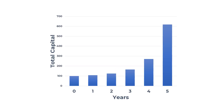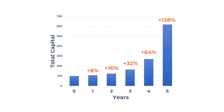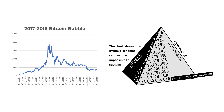Let's say you invested in some security that yielded 8% returns in the first year, 16% in the second, 32% in the third, and 64% in the fourth year. Can we expect 128% returns next year? Sounds too good to be true, right? Because it most likely is. Chances are it's either a pyramid scheme that is bound to collapse, or a bubble that will burst at some point.